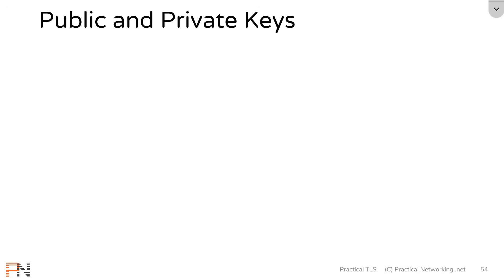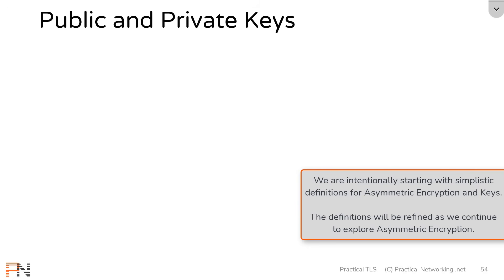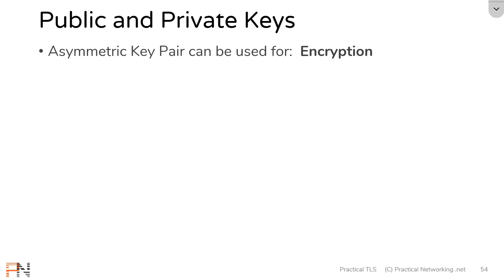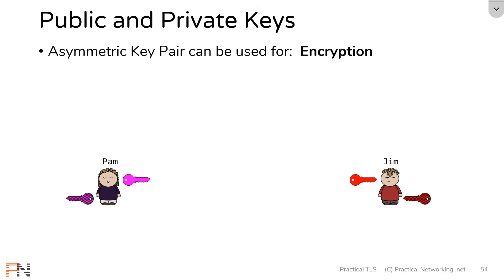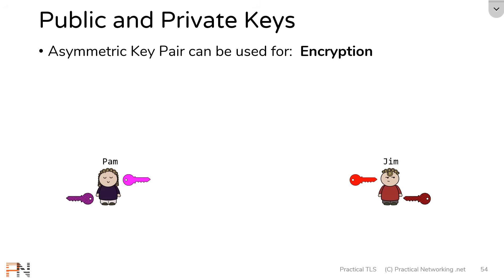In the last lesson we talked about symmetric encryption and asymmetric encryption. We mentioned that asymmetric encryption uses two different keys — those two keys are referred to as a key pair. Pam and Jim are going to use asymmetric keys to securely exchange data. They each have their own set of public and private keys. Pam's public key is available to Jim, while her private key is hidden from anyone else. What is encrypted with the public key can only be decrypted with the private key, and vice versa.